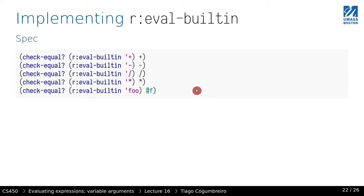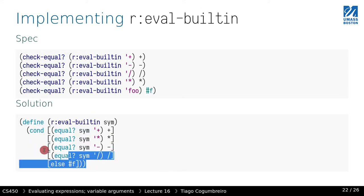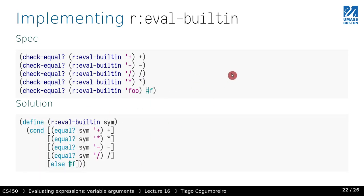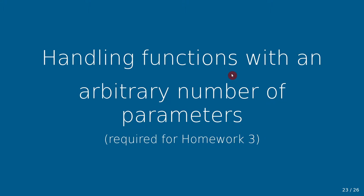eval_built_in takes a variable and converts it into an actual function. It's straightforward: a conditional checks if the symbol is plus — return plus; if it's minus — return minus; and importantly, if it's unknown, return false. The solution has one branch per symbol. In the next video, I'll cover how to handle functions with an arbitrary number of parameters, which will also be needed for homework 3.